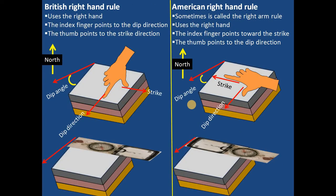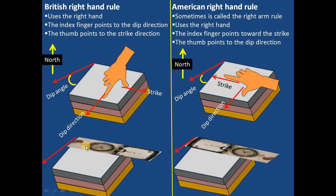So let's see what the British and American right-hand rules are. The British right-hand rule uses the right hand. The index finger points to the dip direction. We have made an assumption that these are the beds and they are dipping in this direction — this is the dip direction and the strike. When using a Sunto compass, I will put the compass in such a way that I can read the strike in the strike direction.